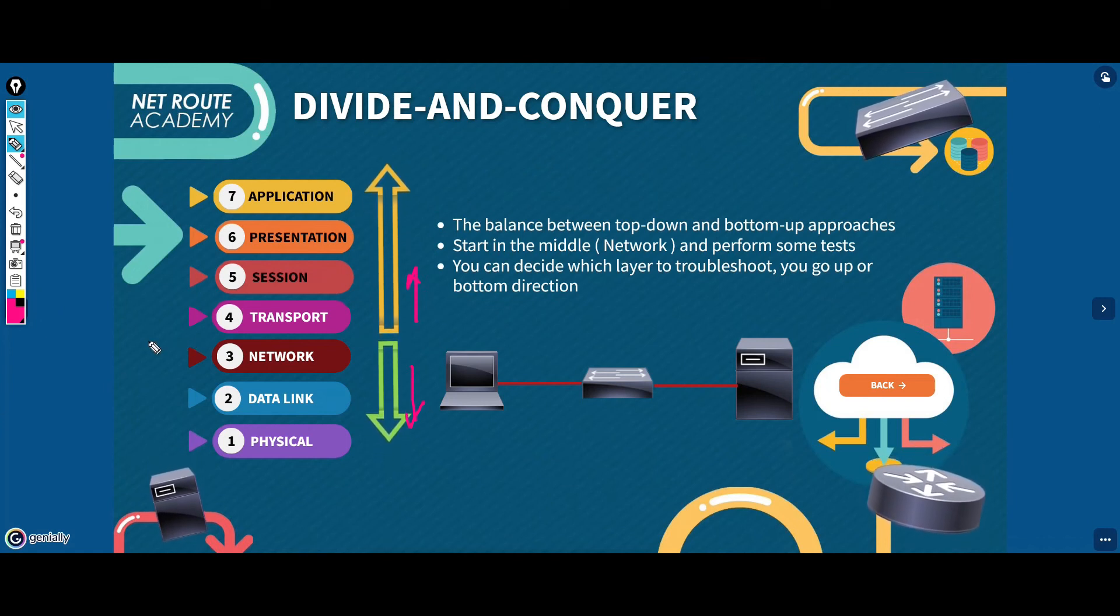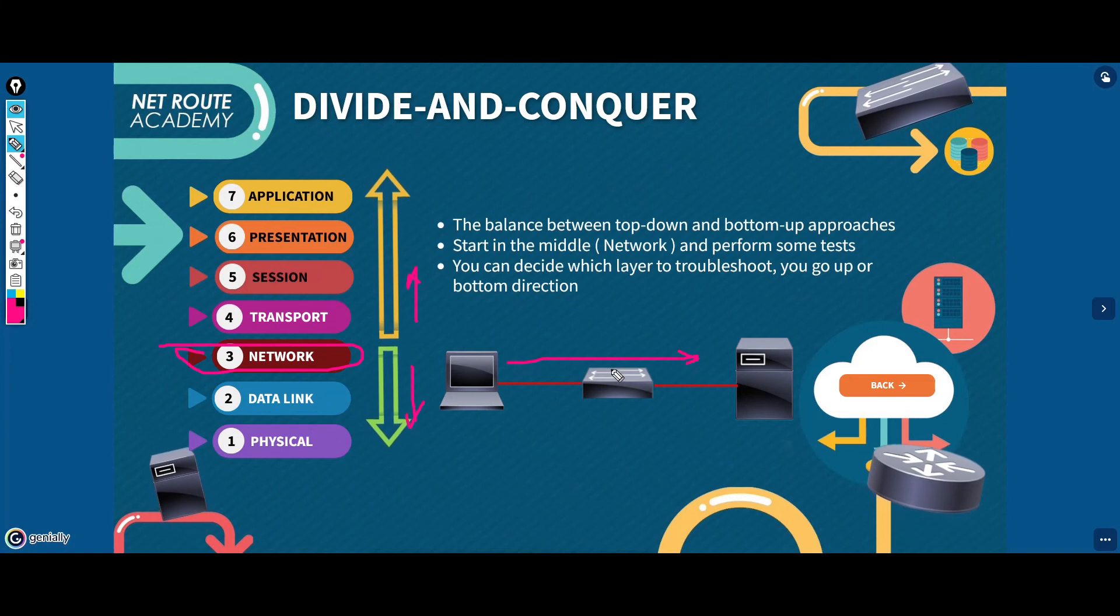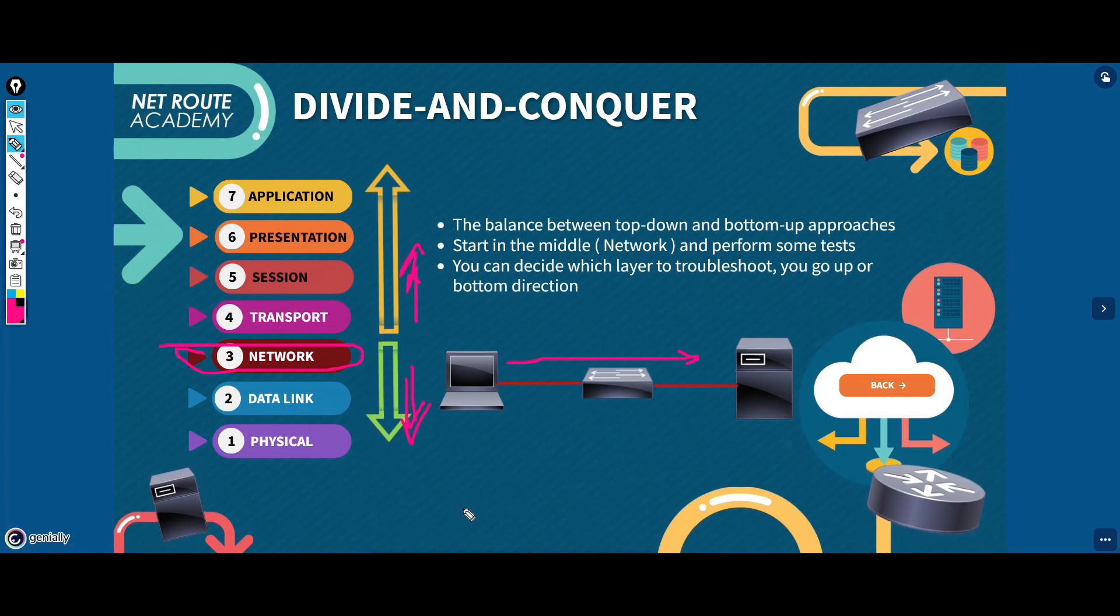You need to start in the middle, that's why it's divide and conquer, such as the network layer performing a ping and then doing a traceroute, and then based on the success, you can work your way either up or down in the protocol stack.